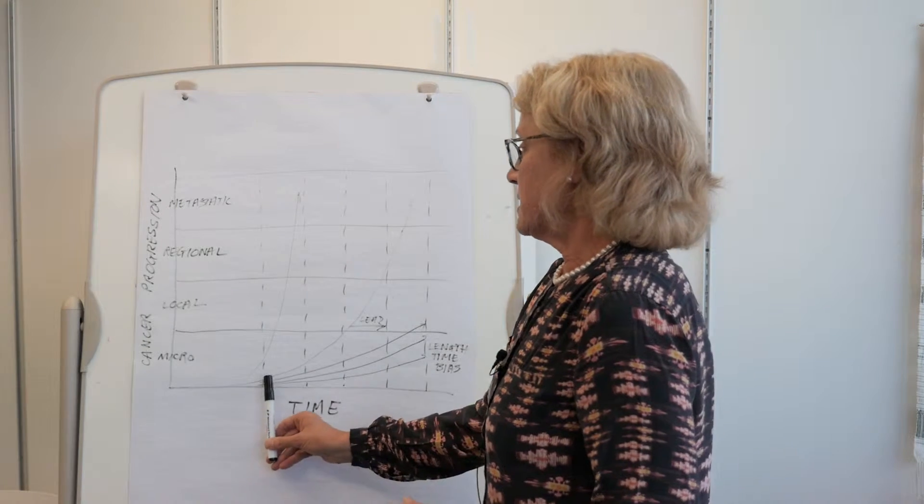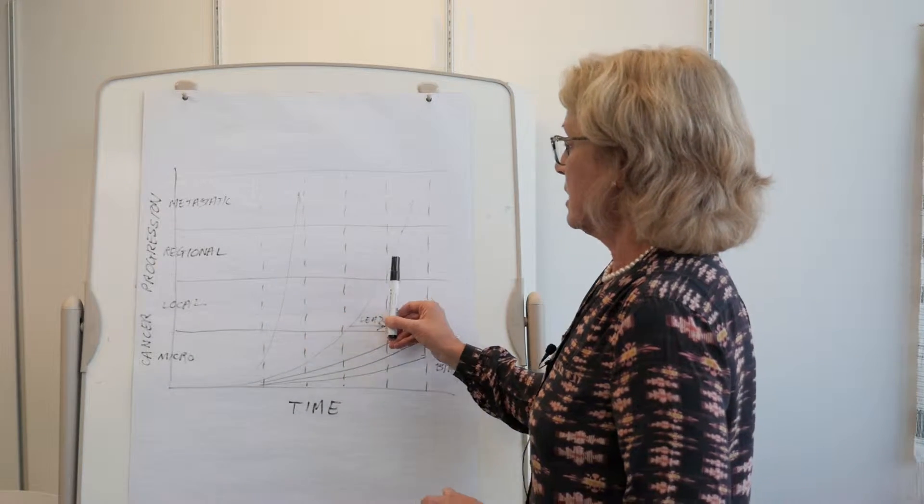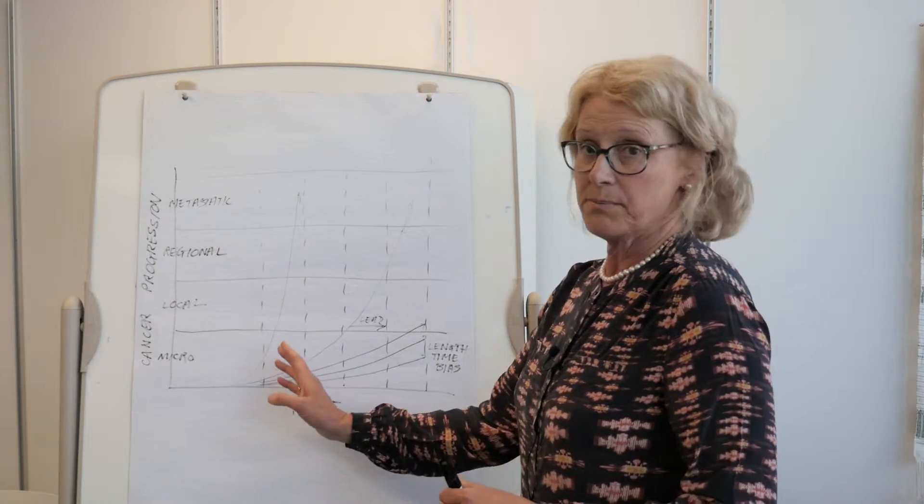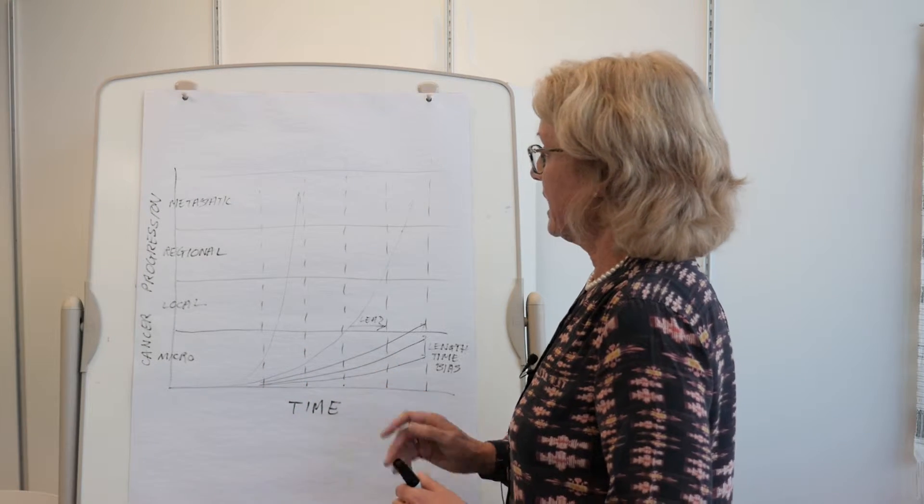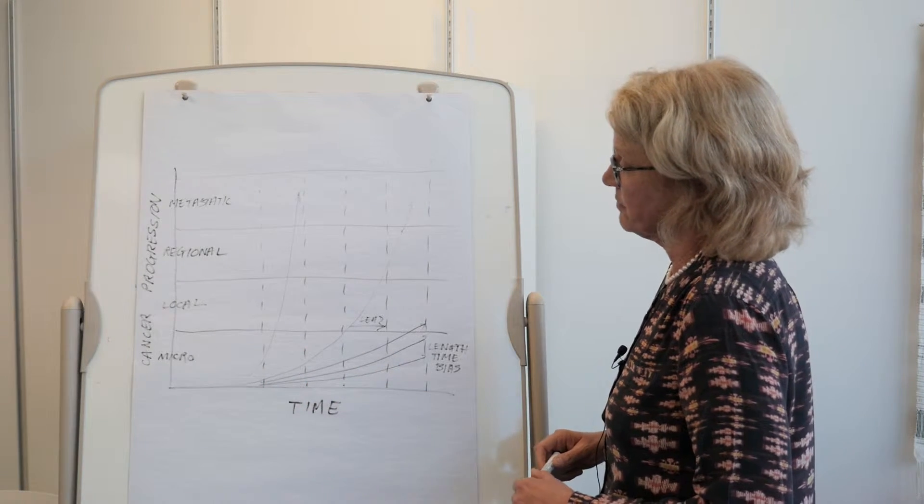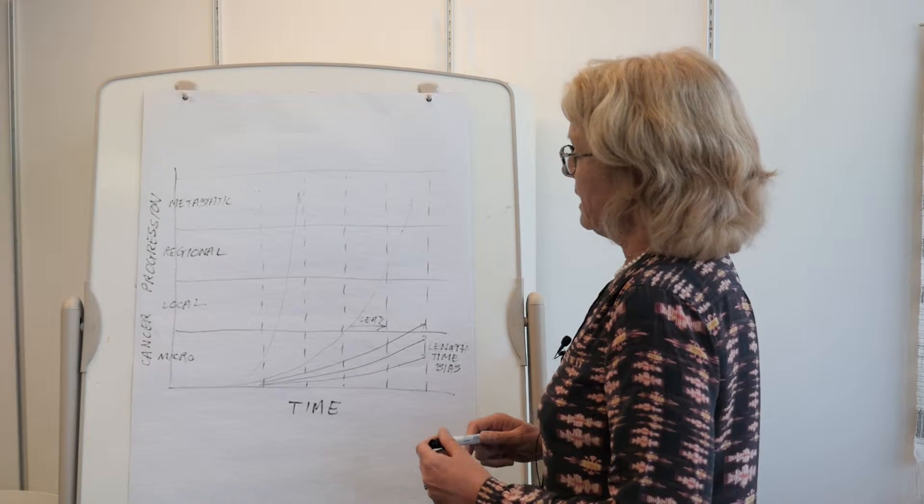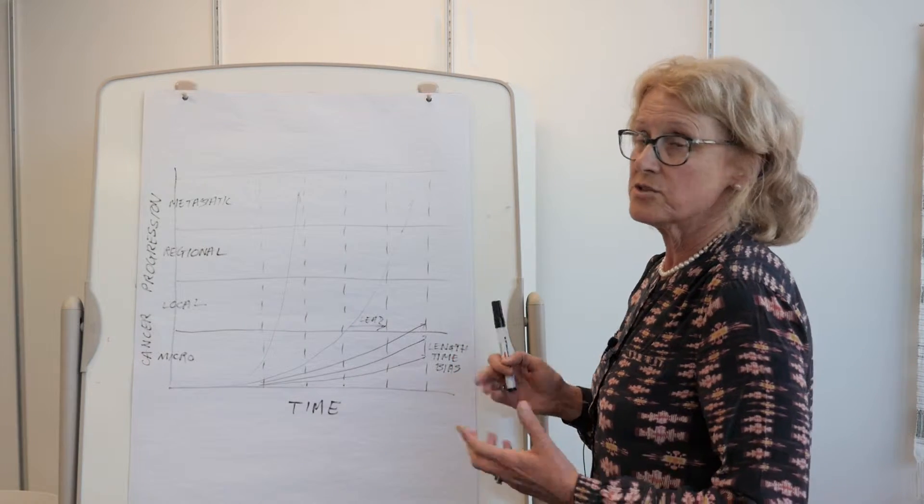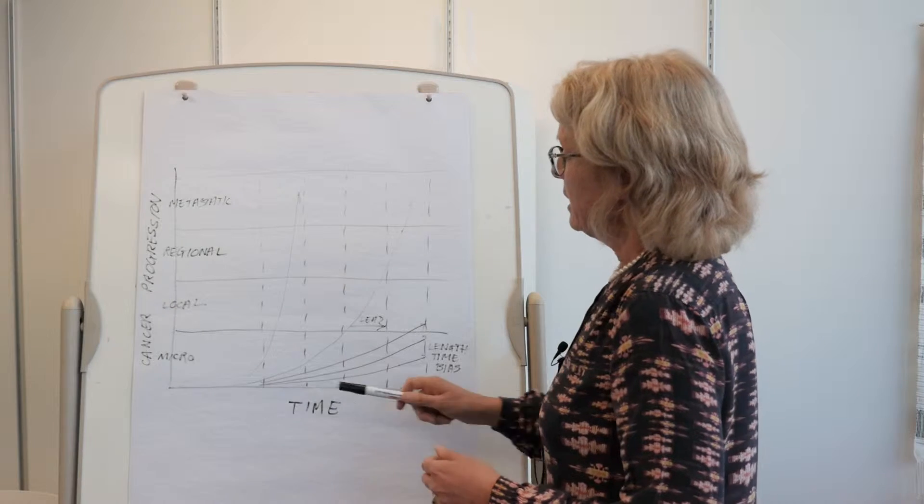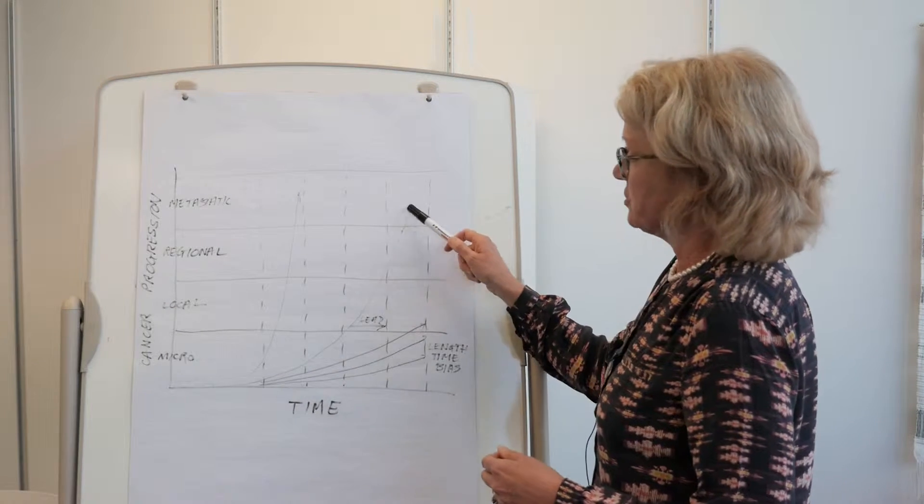What I've represented here with repeated dotted lines are repeated episodes of screening for the cancer that we're interested in. The sort of cancer that we would envisage that screening is useful for is one that would follow a trajectory like this.